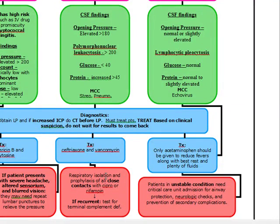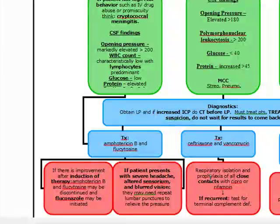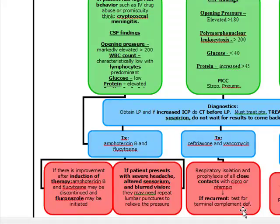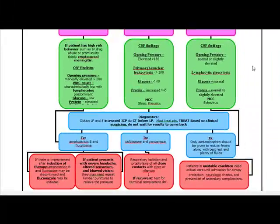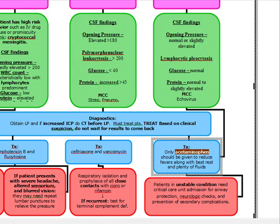For bacterial meningitis, do respiratory isolation and prophylaxis of all close contacts with Cipro or Rifampin — Rifampin is what you'll see on the test. If it's recurrent bacterial meningitis, test for terminal complement deficiency — a very high-yield point. Viral meningitis treatment is just symptomatic: acetaminophen to reduce fever, fluids. If the patient is unstable, place them in the critical care unit, protect the airway, do neurological checks, and prevent secondary complications.